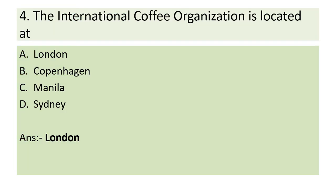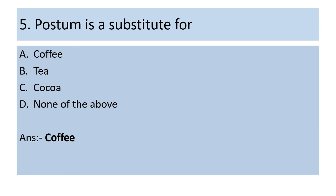The International Coffee Organization is located at — London, Copenhagen, Manila, or Sydney. Answer: London. Postum is a substitute for — coffee, tea, cocoa, or none of the above. Answer: Coffee.